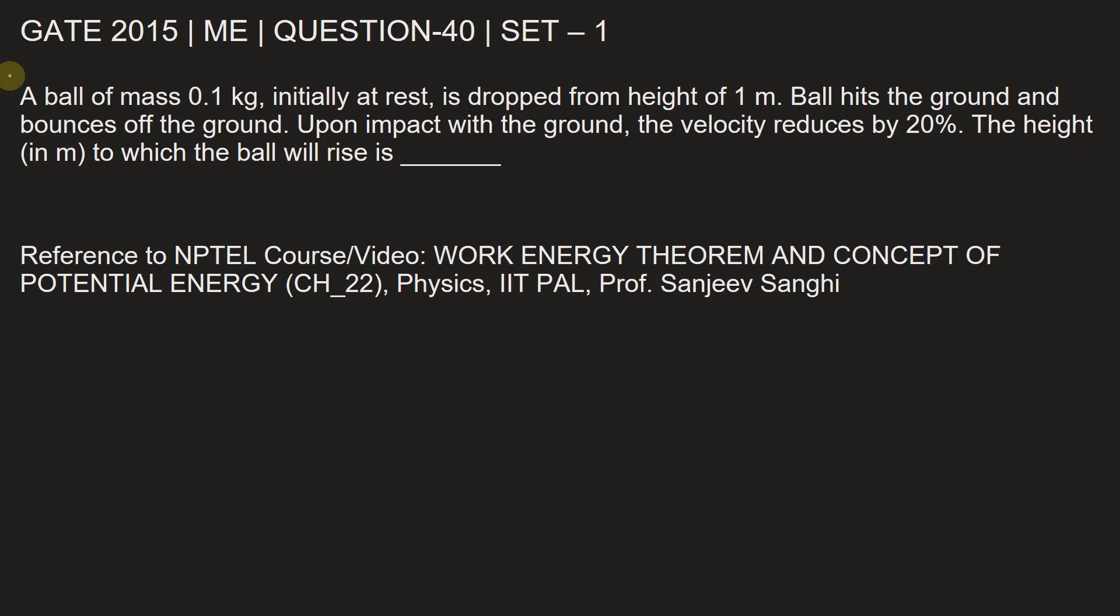This question is from Gate 2015, Mechanical Engineering Paper, Set 1, Question No. 40. A ball of mass of 0.1 kg initially at rest is dropped from a height of 1 meter. Ball hits the ground and bounces off the ground. Upon impact with the ground, the velocity reduces by 20%. The height in meter to which the ball will rise is dash.